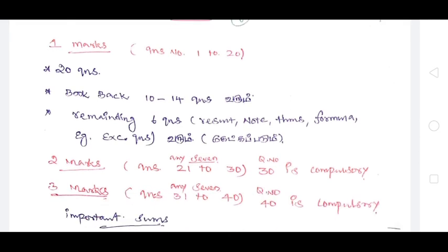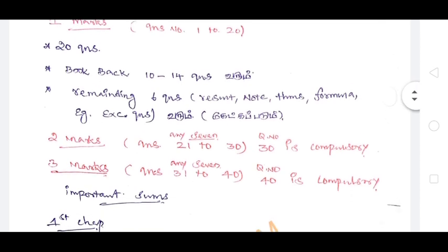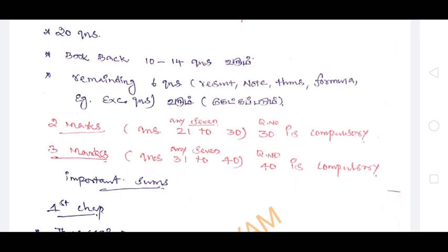If you want to read the first one mark, there are 20 questions, and there are 10 to 14 questions. If you want to read the results, the notes, the formulas, the base money, the questions, there are 14 questions in the book.